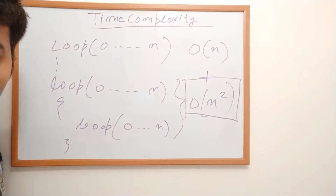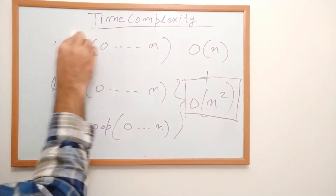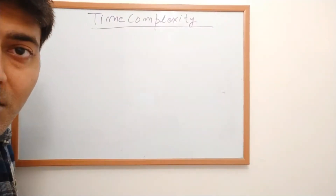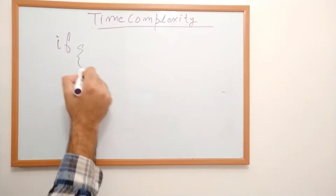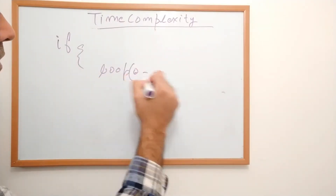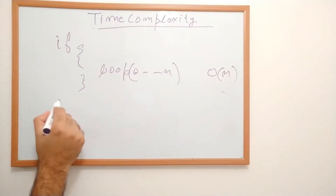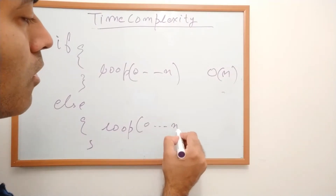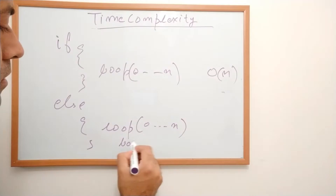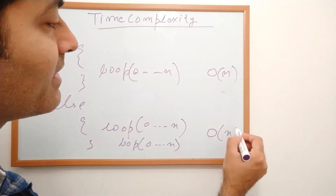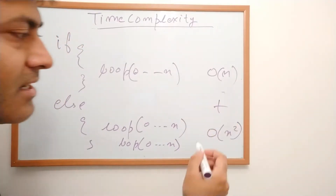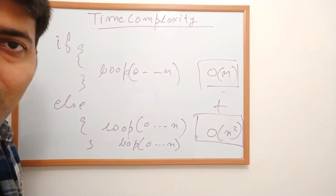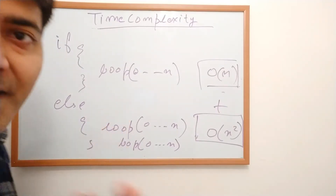Let us take one more example with an if-else statement. In the if block you might have a single loop from 0 to n with time complexity O(n). In the else block you have a nested loop, giving time complexity O(n²). The overall time complexity is O(n) + O(n²), and since we ignore the smaller part, the final time complexity in Big O notation is O(n²).